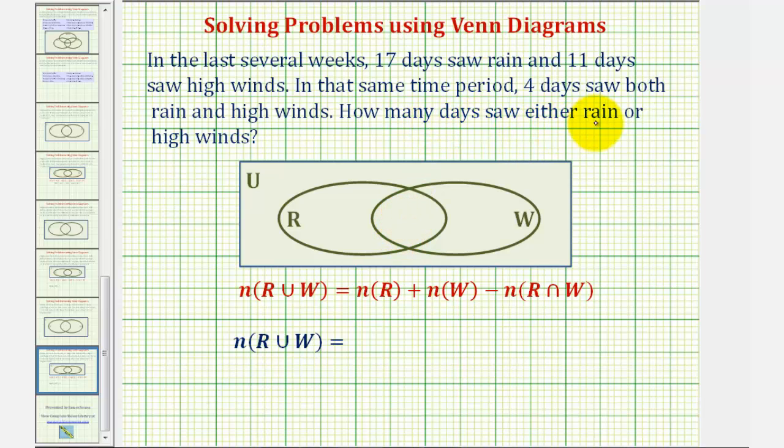So to find the number of days that saw either rain or high winds, we want to find the number of elements, in this case the number of days, in the union of set R and set W.